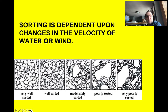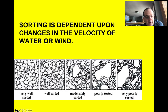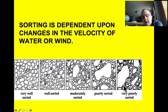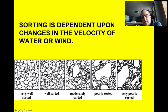Sorting of sediment is dependent on changes in velocity of the water or the wind. We have very well sorted, well sorted, moderately sorted, poorly sorted, and very poorly sorted. At the poorly-sorted end, we're heading towards unsorted glacial till, but you can have gradations from very poorly to very well sorted that aren't associated with glaciers.